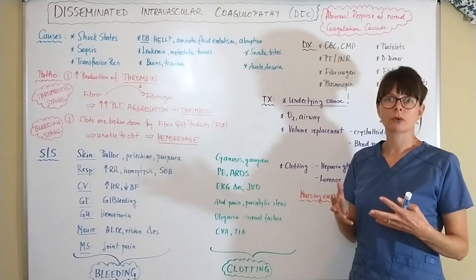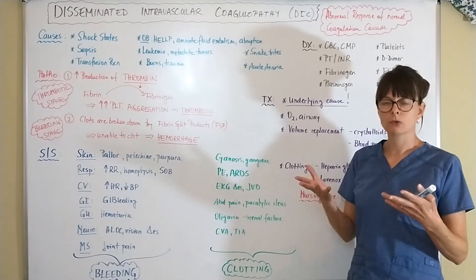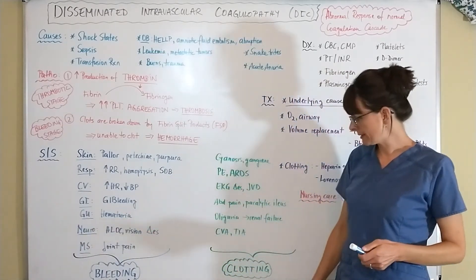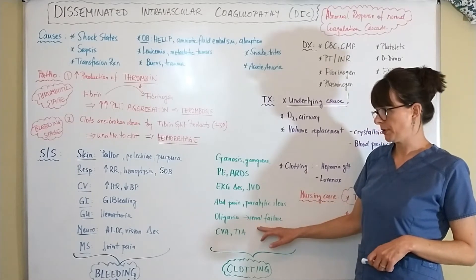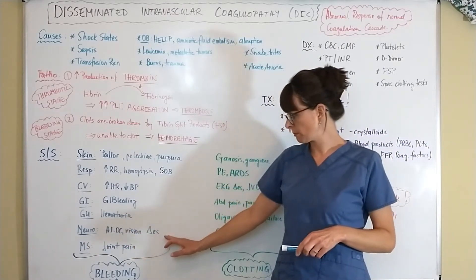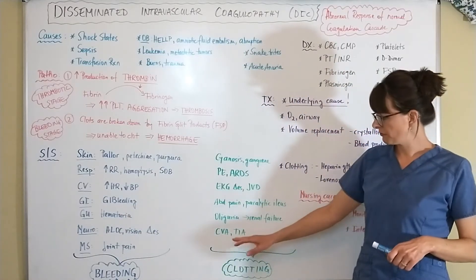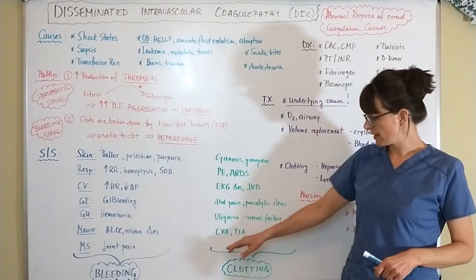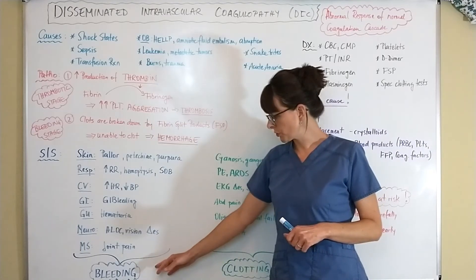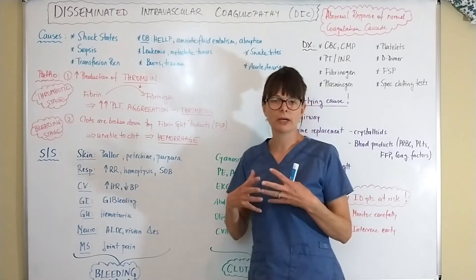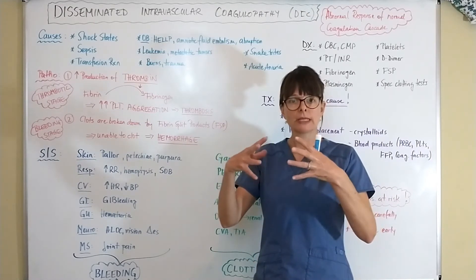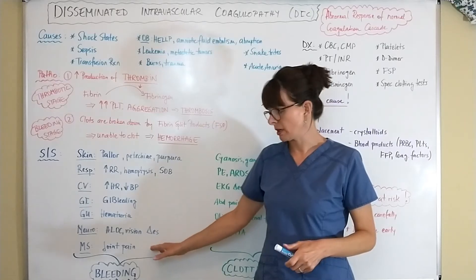A paralytic ileus may develop because insufficient blood flow impairs normal GI function. In the GU system, hematuria — bleeding in the urinary tract — can lead to oliguria and renal failure. In the neurologic system, bleeding may cause altered level of consciousness and vision changes. Clotting in the brain leads to TIAs and CVAs. In the musculoskeletal system, a phenomenon called hemarthrosis occurs where blood settles into the joints, causing swelling and significant pain.